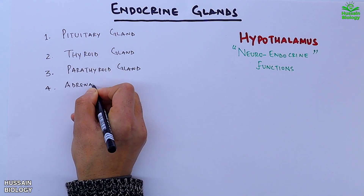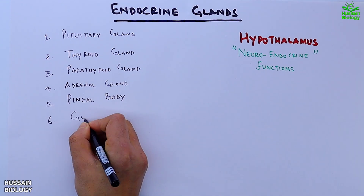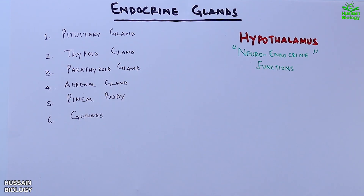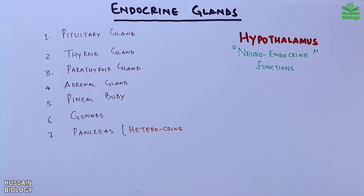Fourth is the adrenal gland. Fifth is the pineal body. Sixth is the gonads. Seventh is the pancreas, which acts as a heterocrine gland, meaning it acts as both an exocrine and an endocrine gland.